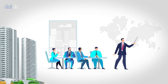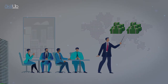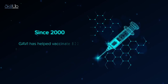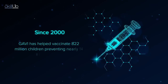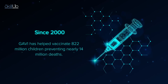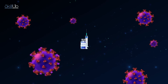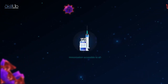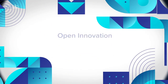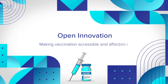Private firms and industries contribute by donating millions to the cause annually. Since it was founded in 2000, Gavi has helped vaccinate 822 million children, preventing nearly 14 million deaths. Gavi also invites innovation proposals for challenges faced in making immunization accessible to all, thus paving the path for open innovation towards their goal of making vaccination accessible and affordable.